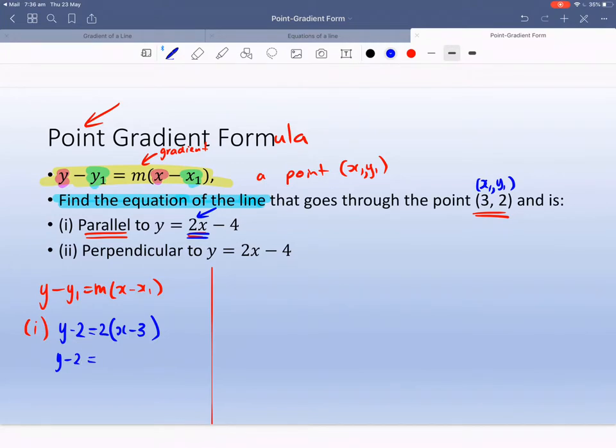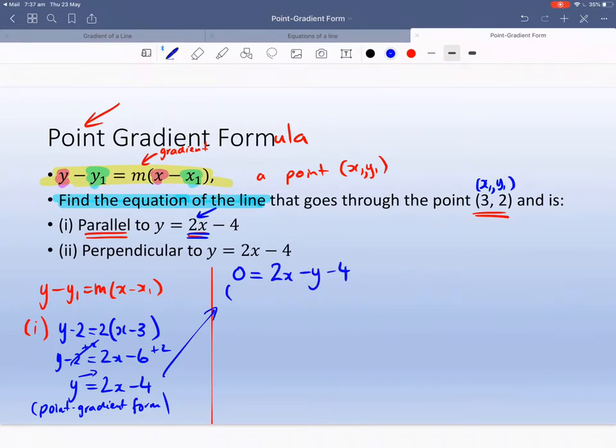So we just use algebra, there's going to be 2X minus 6. I'm going to leave the Y by itself, plus 2, plus 2. So you've got 2X minus 4, and that's in point gradient form. In general form, I need to make everything equal to 0. So you get 2X minus Y minus 4, and that's general form.